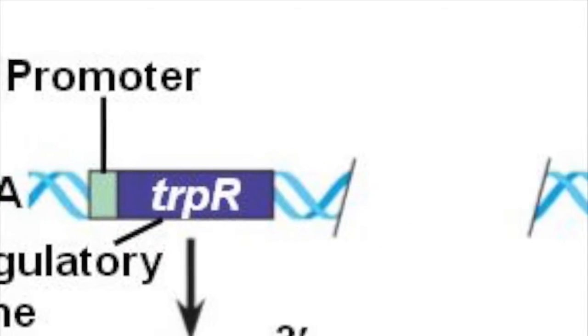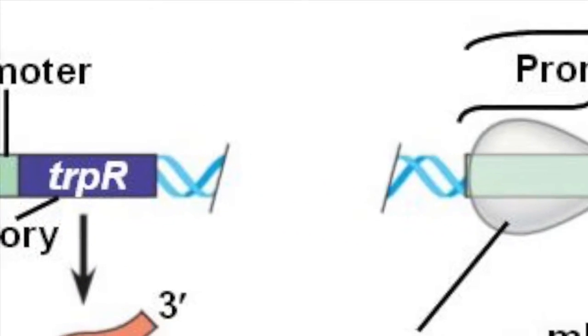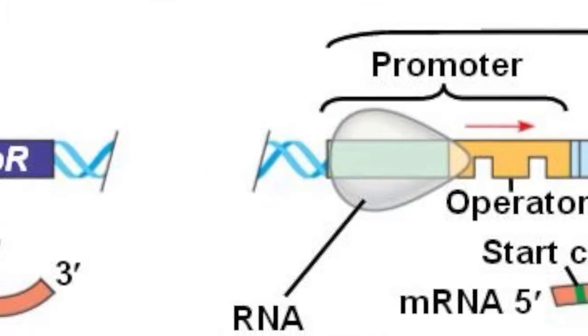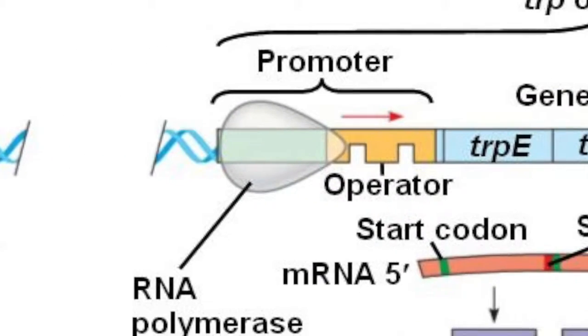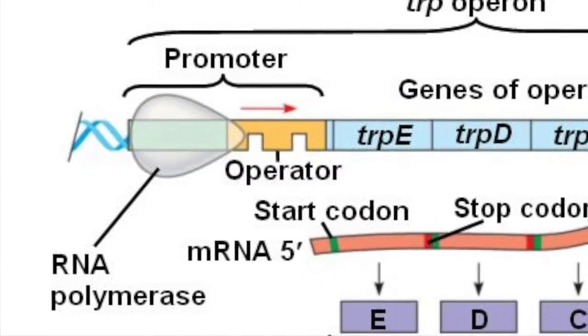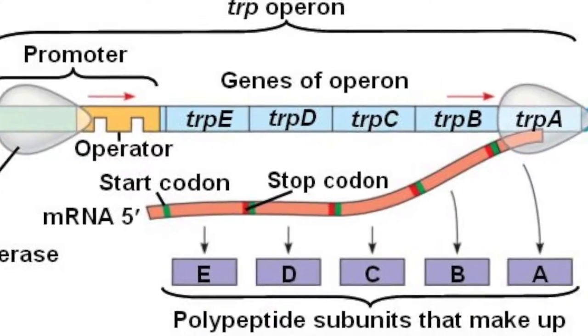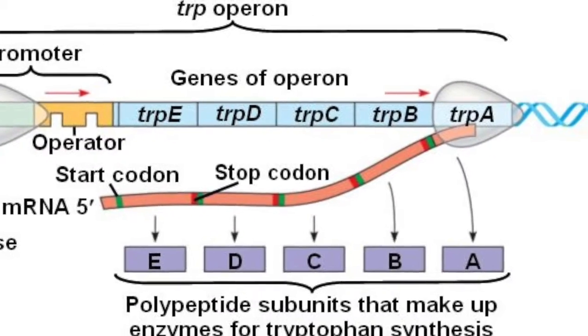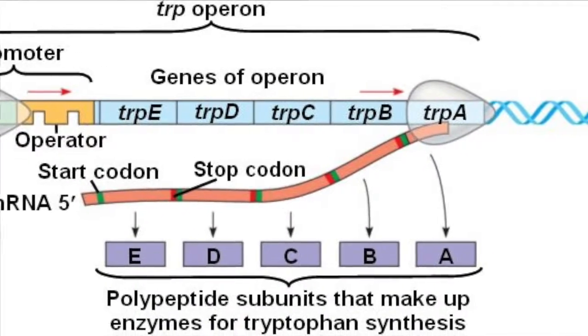The trp operon consists of five structural genes, called trpA, B, C, D, and E.